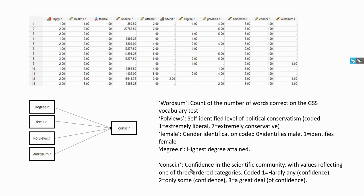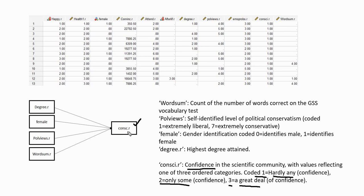In our model, our dependent variable is confidence in the scientific community. It has three levels: coded one for hardly any confidence, two indicating only some confidence, and three indicating a great deal of confidence. So clearly this represents an ordered categorical variable.